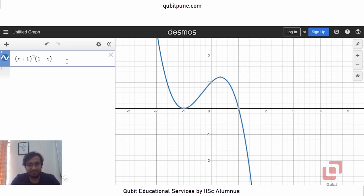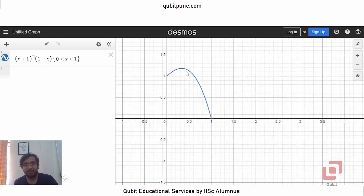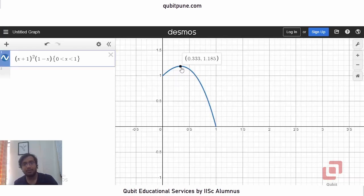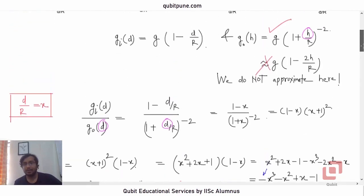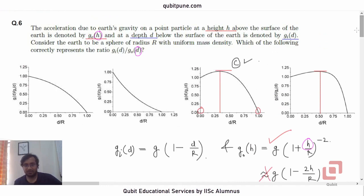So if we just take the portion of the curve when X lies between 0 and 1, then you can very clearly see that at X equal to 1 upon 3, the function peaks. And hence, our qualitative description of the graph is right. So that was question 6.